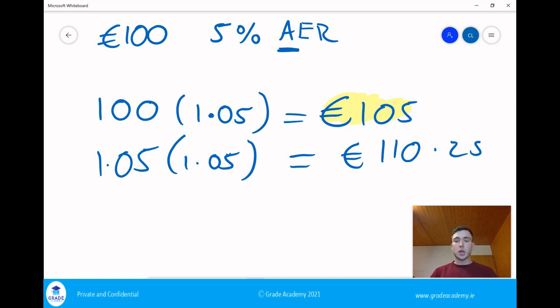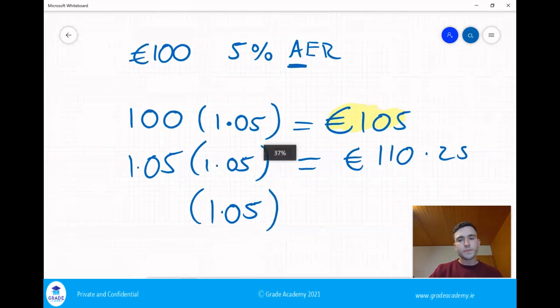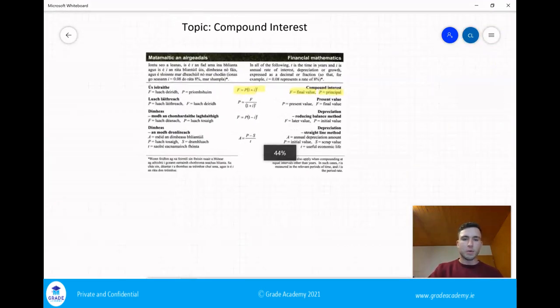We could go on and on, but really what we're doing every time is we're multiplying by this 1.05 and you'll actually see in the formula that's exactly what we're doing.